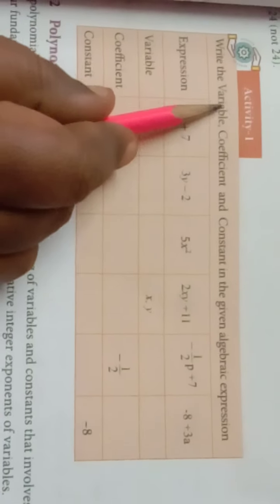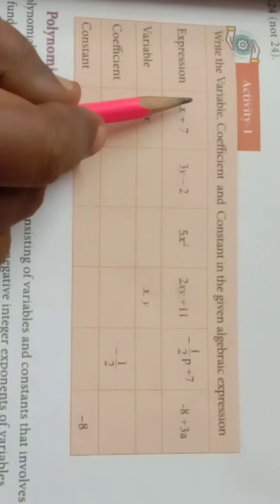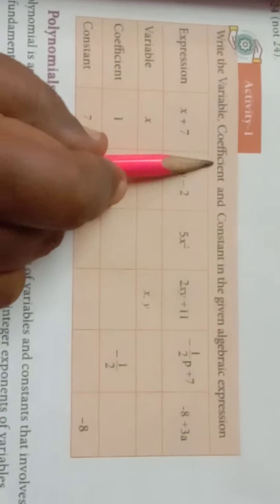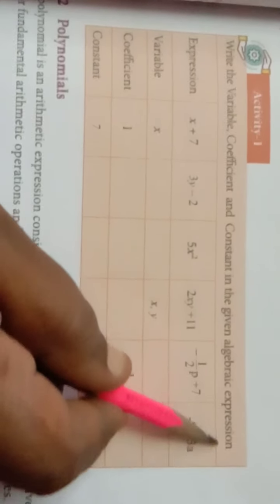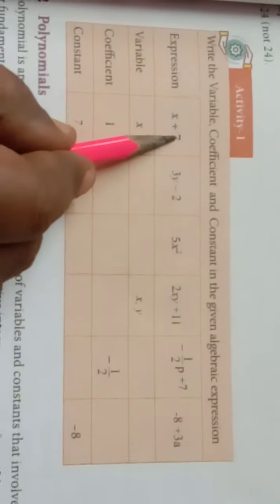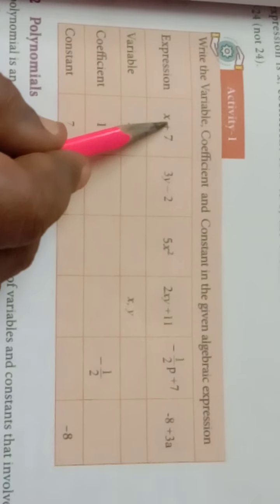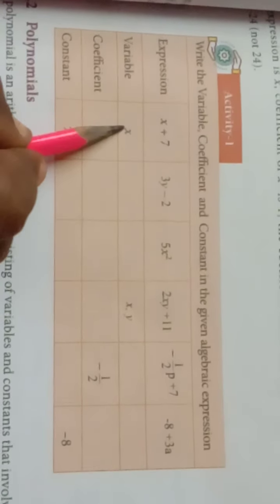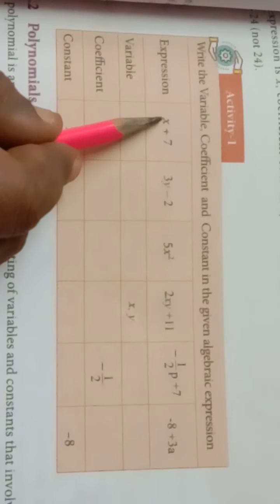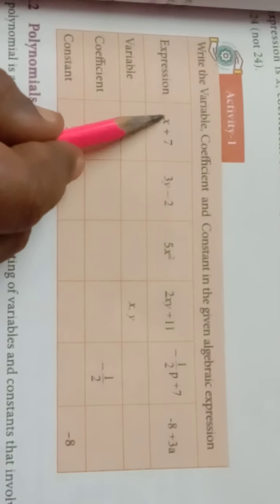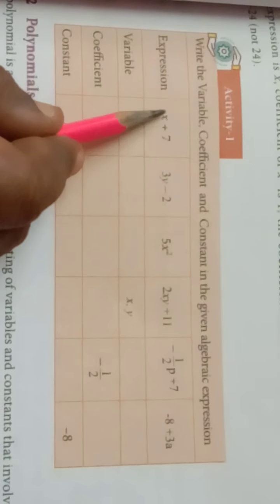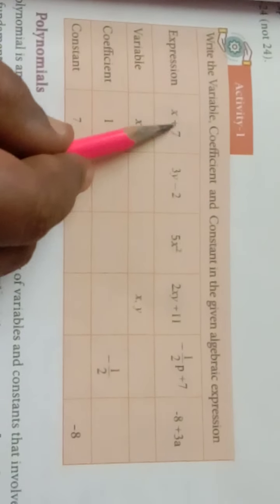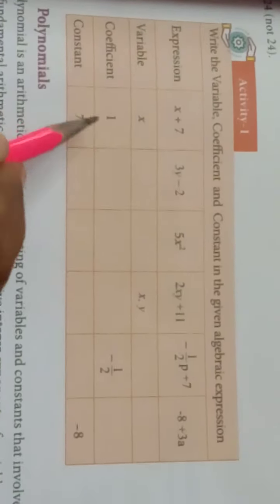Next, this is an activity — you try to do it. Write the variable, coefficient, and constant for the given algebraic expression. For example: x plus 7. The variable is x. The coefficient — nothing is in front of x, so it is 1. The constant — a number without a variable — so it is 7.